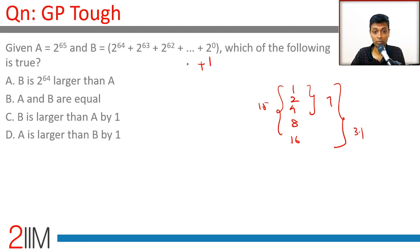So 1 + 2 + 2^2 all the way to 2^64, this is 2^65 - 1. So A is 2^65, B is 2^65 - 1.